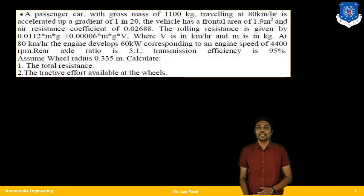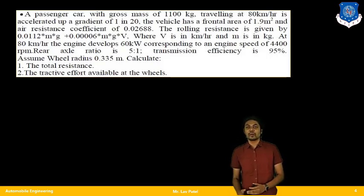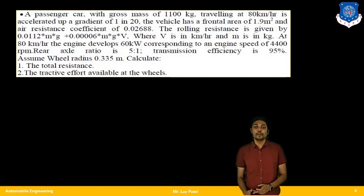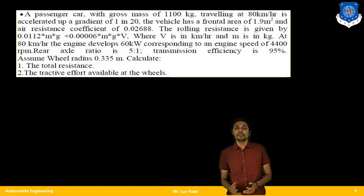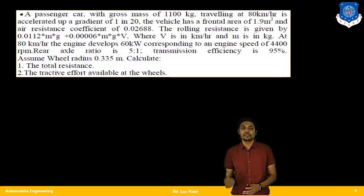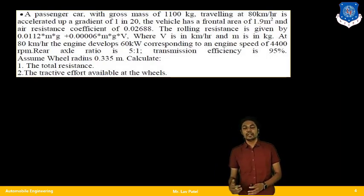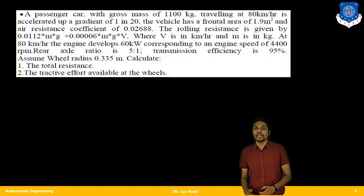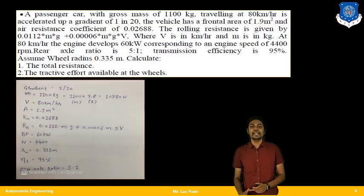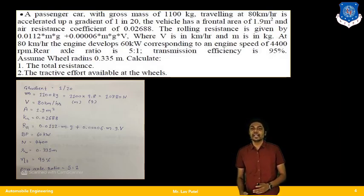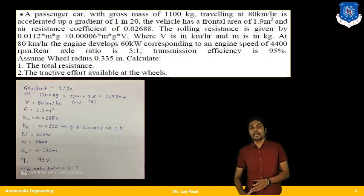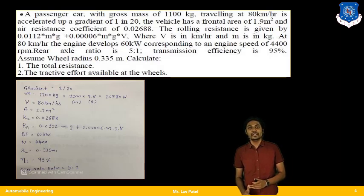In this example, a passenger car with a gross mass of 1100 kg is given. Mass can also be given in Newtons — we convert 1100 kg to Newtons by multiplying with g = 9.8. The vehicle is traveling at a velocity V = 80 km/h and is on a gradient of 1 in 20, so capital G = 1/20.